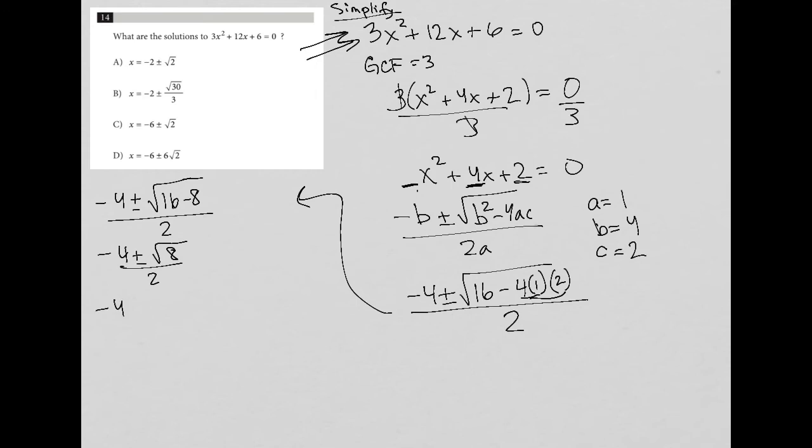The square root of 8 is 2 root 2. So I end up with negative 4 plus or minus 2 root 2, all over 2. And just in case you don't know how I got that, square root of 8, what I love to do is to break any non-perfect square root into a perfect square, if possible, and whatever its matching partner is. So in this case, 4 times 2, the square root of 4 is 2, the square root of root 2 just stays as is, and that's where that came from.